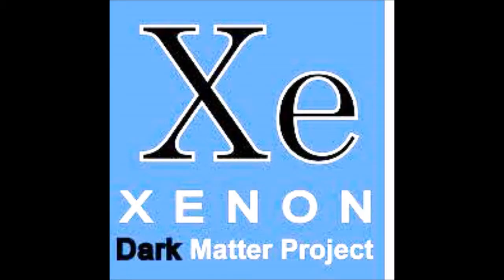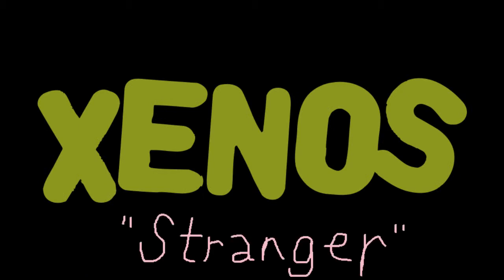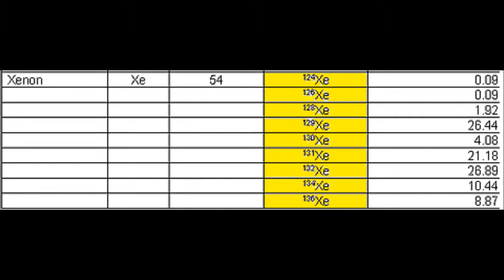The name Xenon derives from the Greek word xenos, meaning stranger, named by those who discovered it. It has 21 isotopes, 9 which are known to be stable.